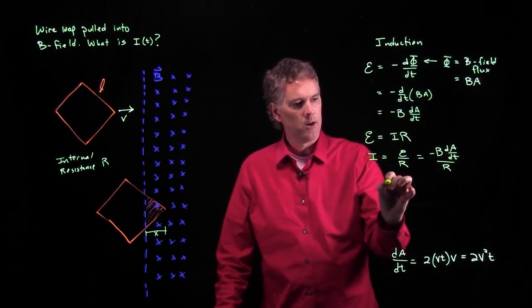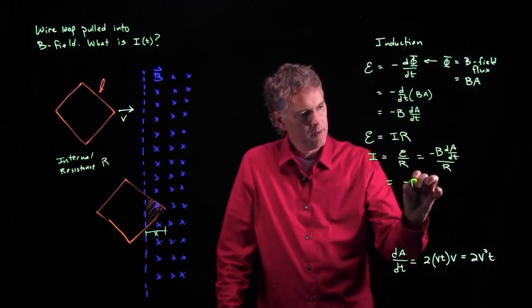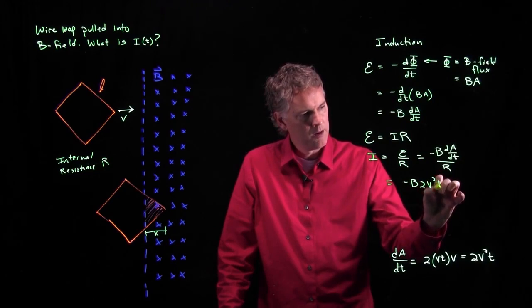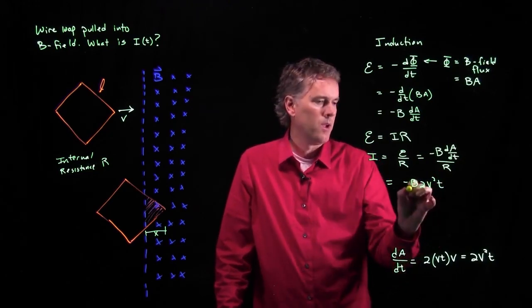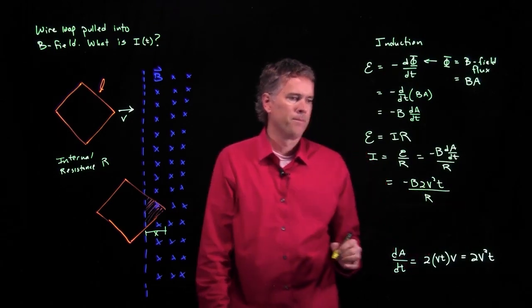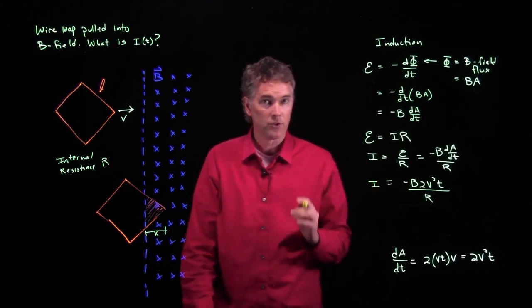And we're going to divide by R. And this is our dA/dt. So we get negative B times 2 times V² times T, and we're going to divide by R.